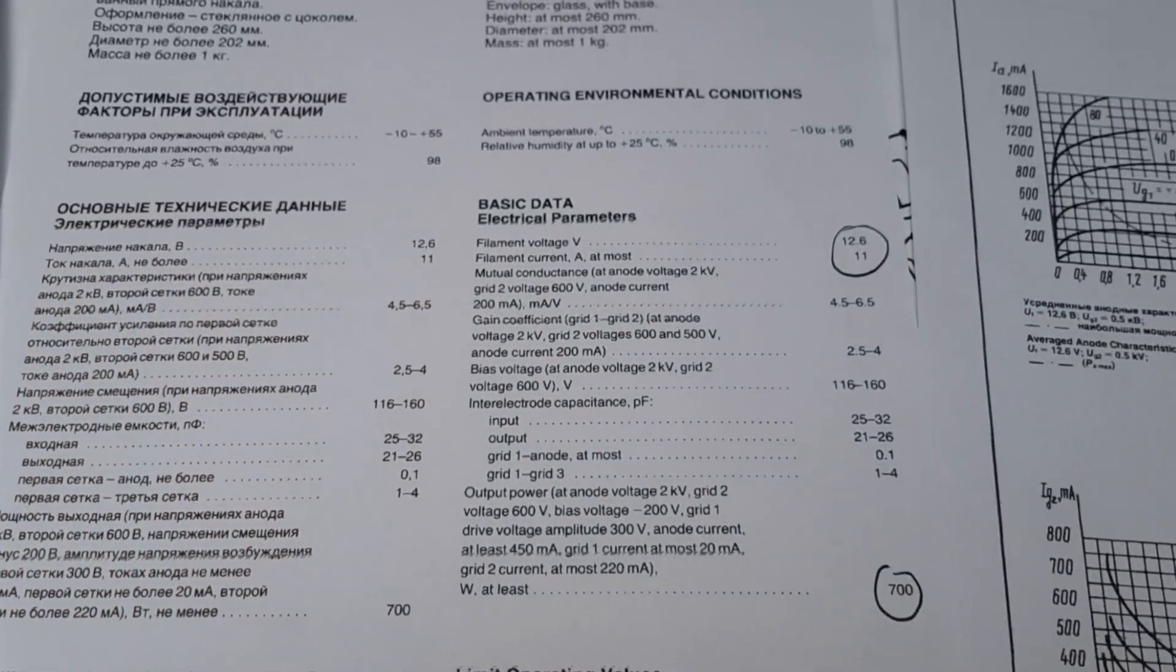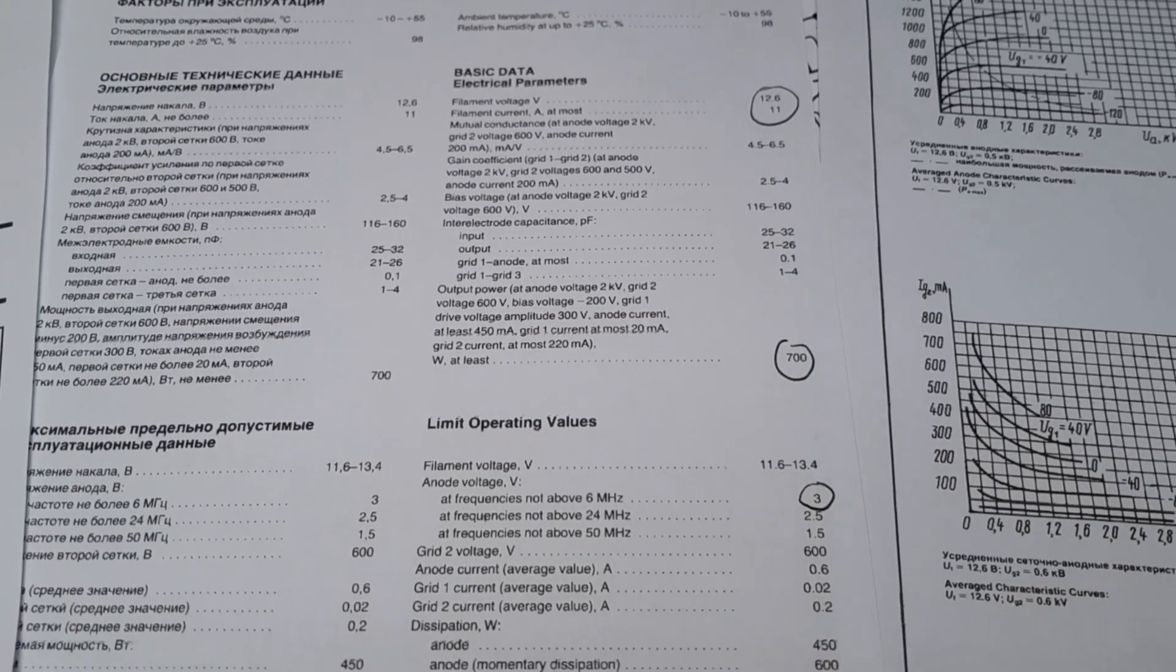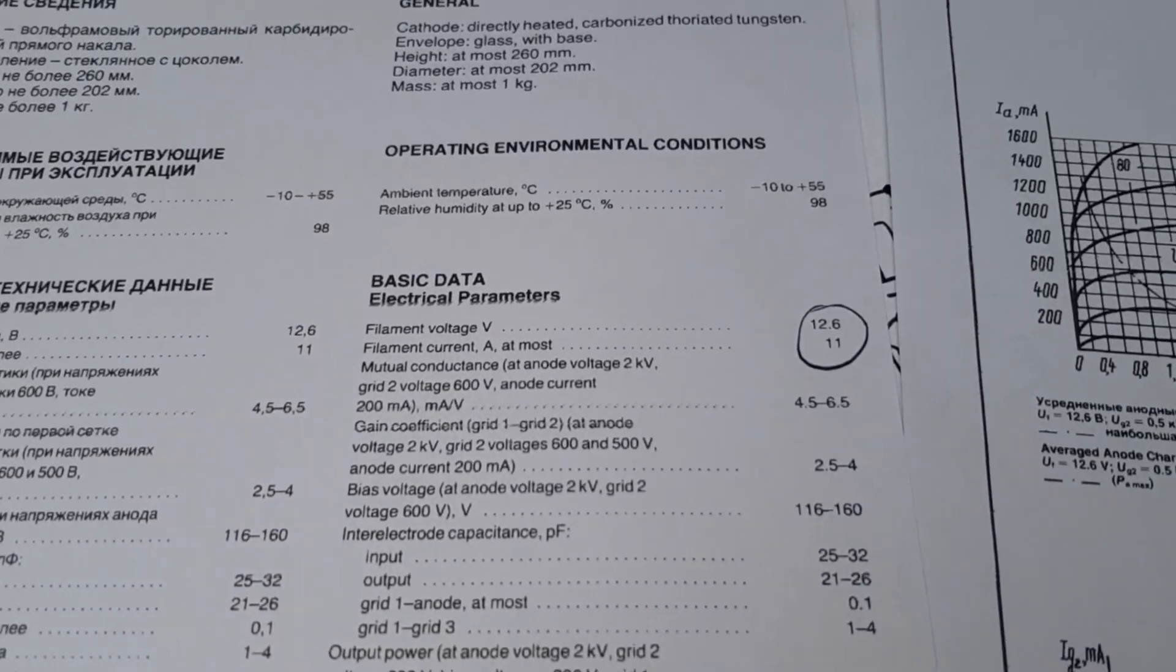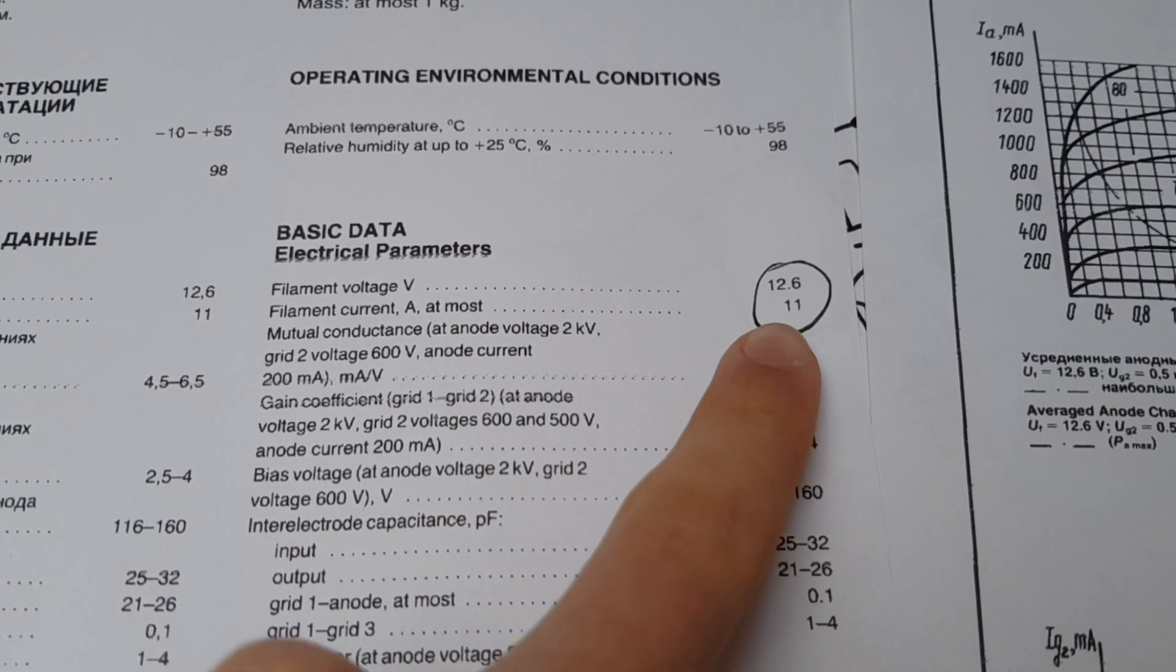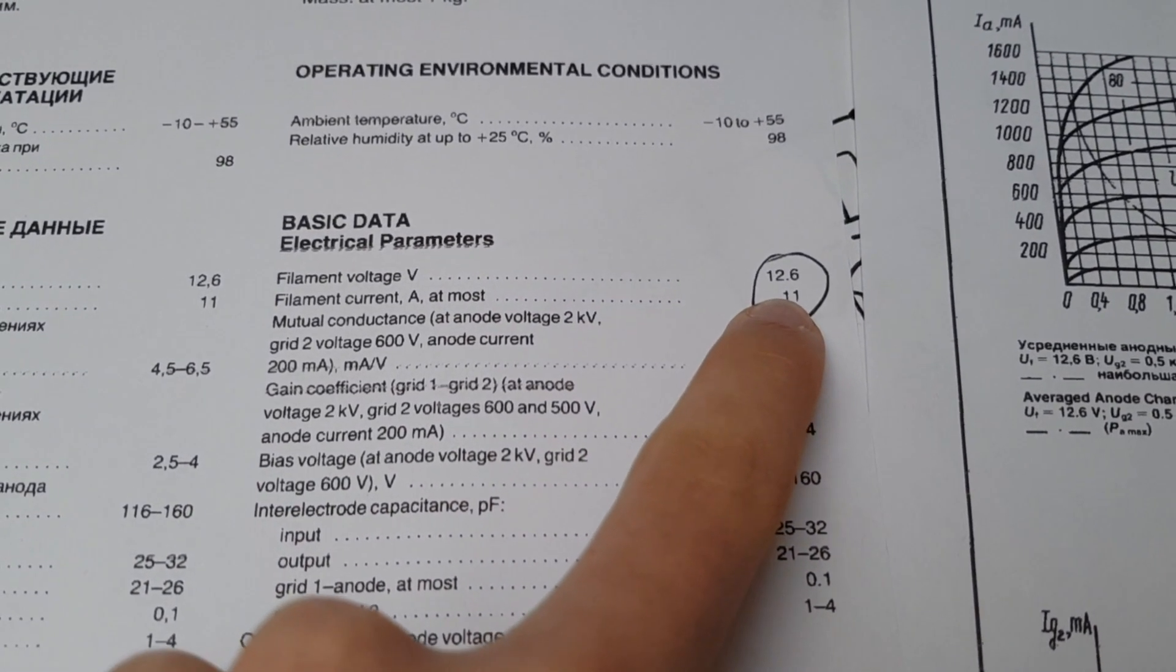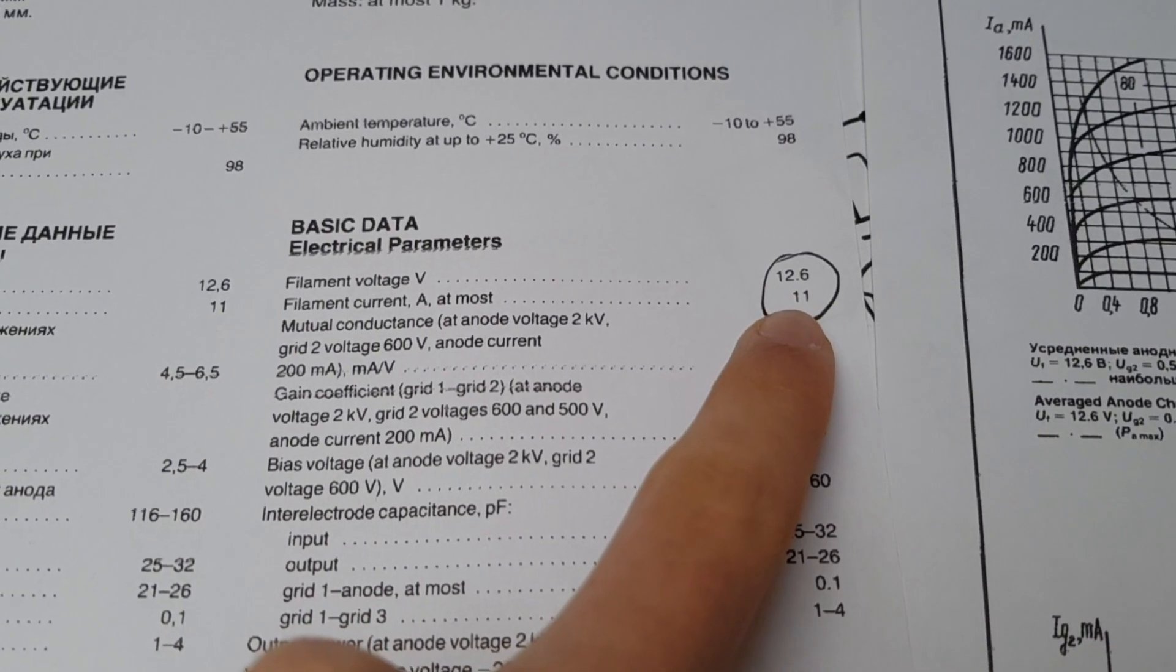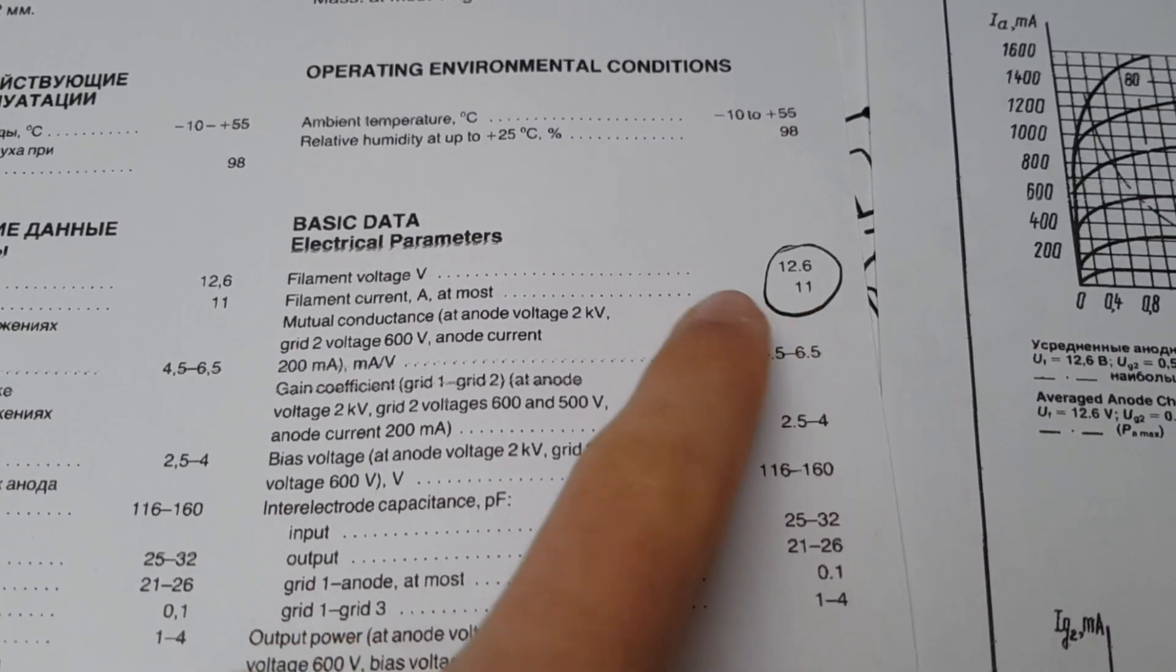So yeah, let's start. So here we can see the tube is a pentode. Here we can see all the connections, so then we know how to connect the tube. Then we move on and well, now we can see for example one of the most important things is to know your filament voltage. So we know this tube needs 12.6 volts at around 11 amps at most.